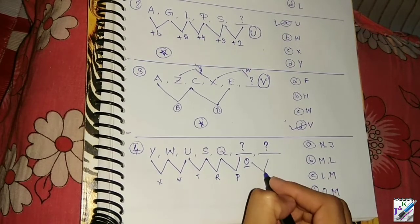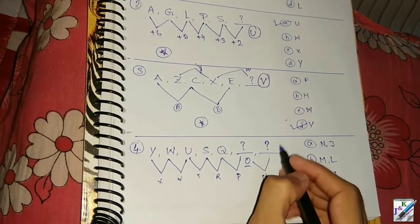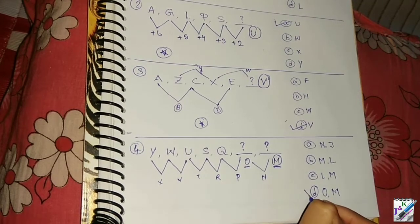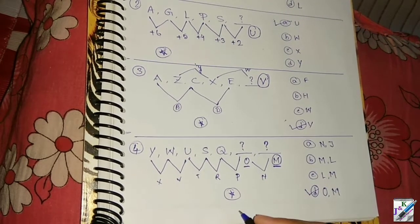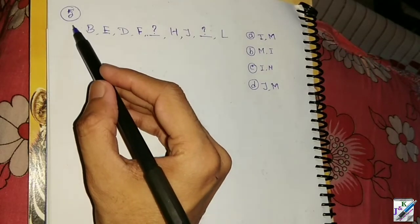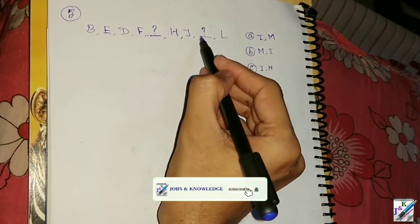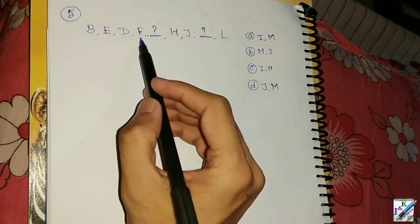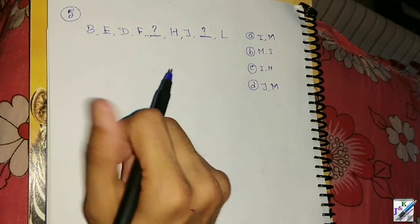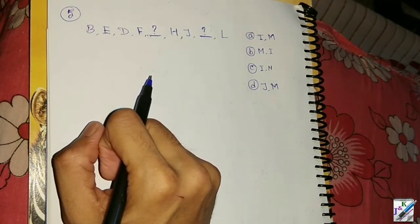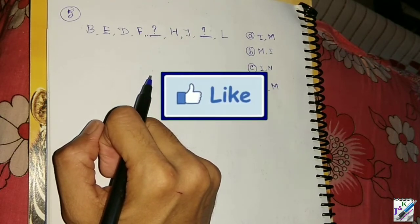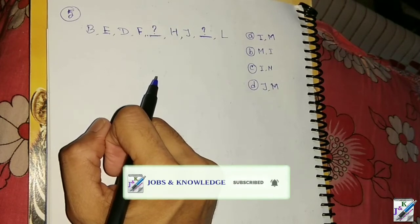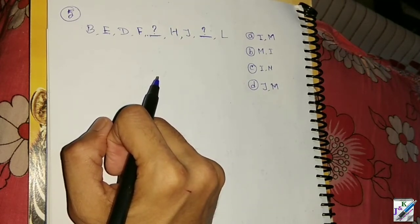The first option is N. The first option is D. This is the reasoning. This is the 5th number series with 2 question marks. Please follow the comment box for the 3rd part of this video. Please like and subscribe. Thank you.